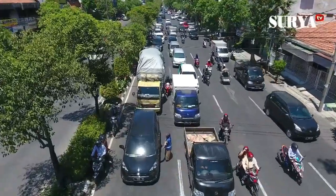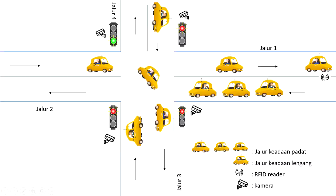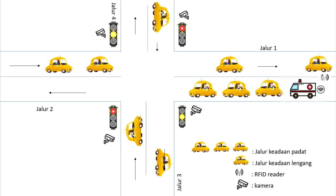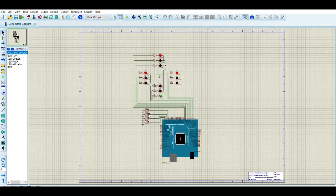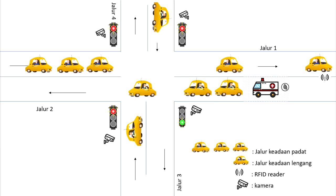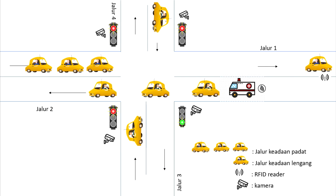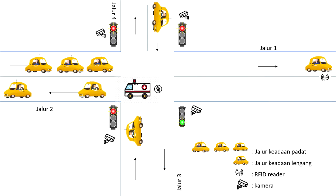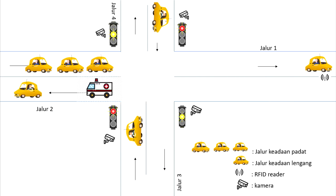Cara yang kedua adalah pada persimpangan yang begitu padat: ketika RFID mendeteksi adanya ambulan yang lewat, maka RFID akan memberikan input kepada Raspberry Pi, dan kamera juga akan memberikan input kepada Raspberry Pi bahwa terjadi kepadatan, sehingga memunculkan output lampu hijau menyala selama 50 detik.